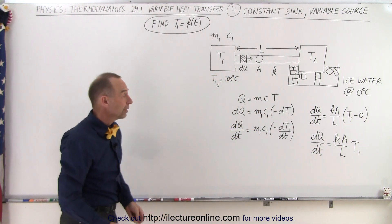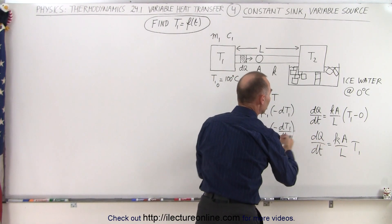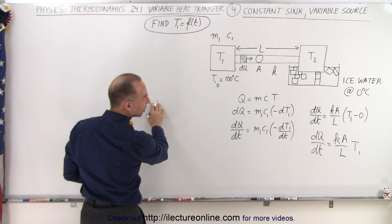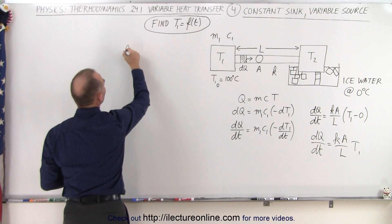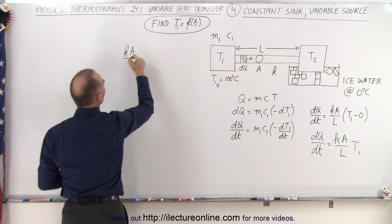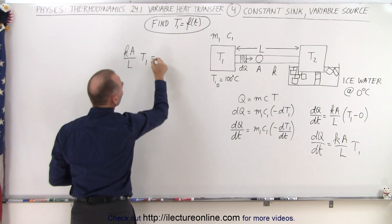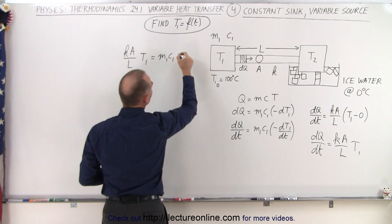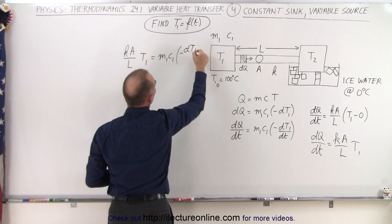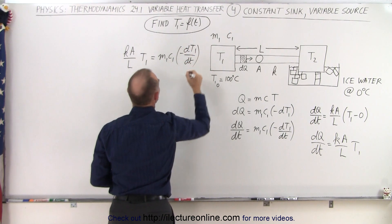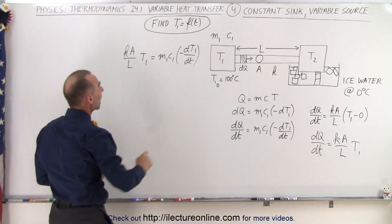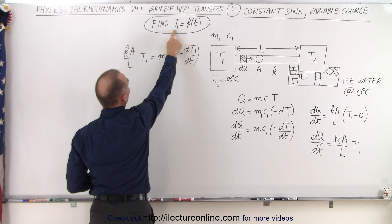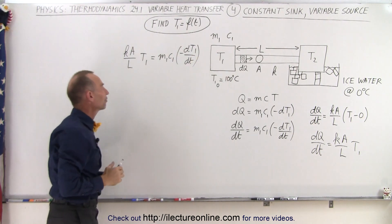Now, what we can do, and this is a good technique, we're going to set these two equations equal to each other. And so that means that on the left side, we can write that Ka over L times T1 is going to be equal to M1C1 times the negative dt1 over dt. Notice we now have two variables, we have temperature and time, and since we're looking for an equation that expresses temperature as a function of time, we have the correct variables.